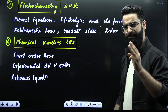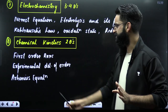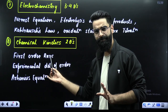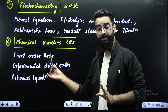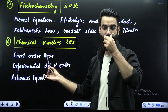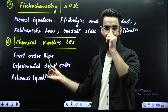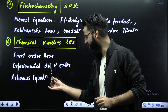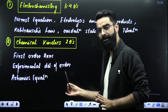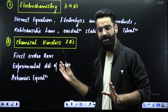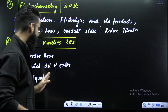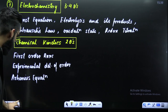Chemical kinetics — three important topics: first order reaction, which involves the integrated rate equation, experimental determination of order, and Arrhenius equation. These are the three short topics of the chapter chemical kinetics.